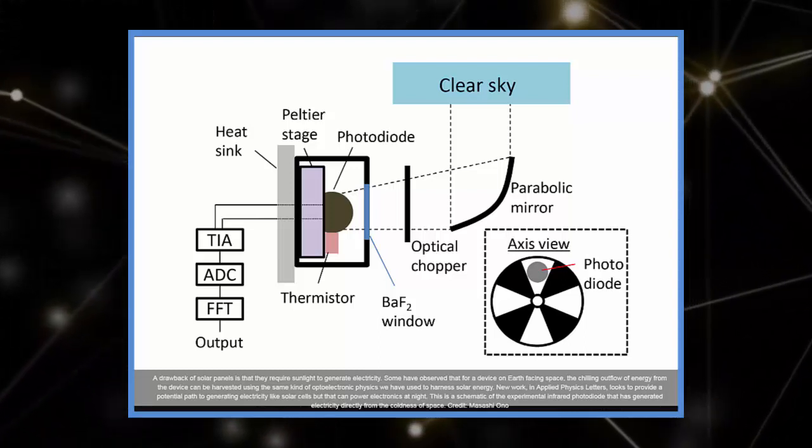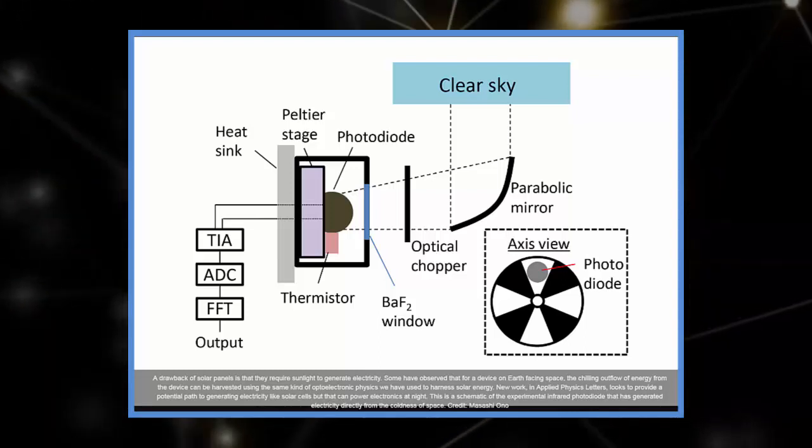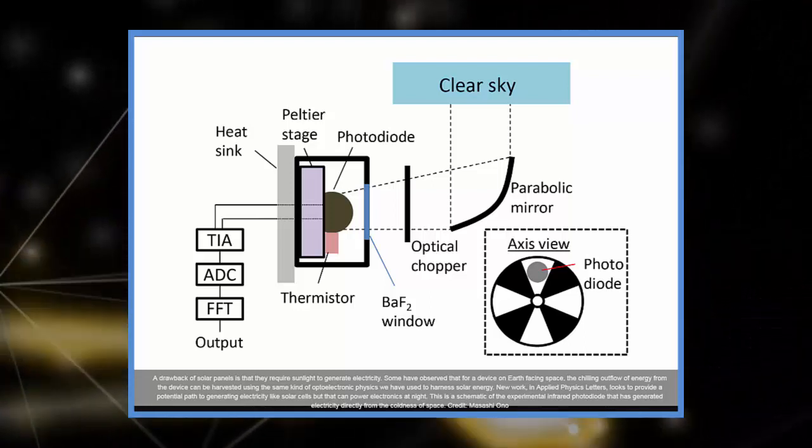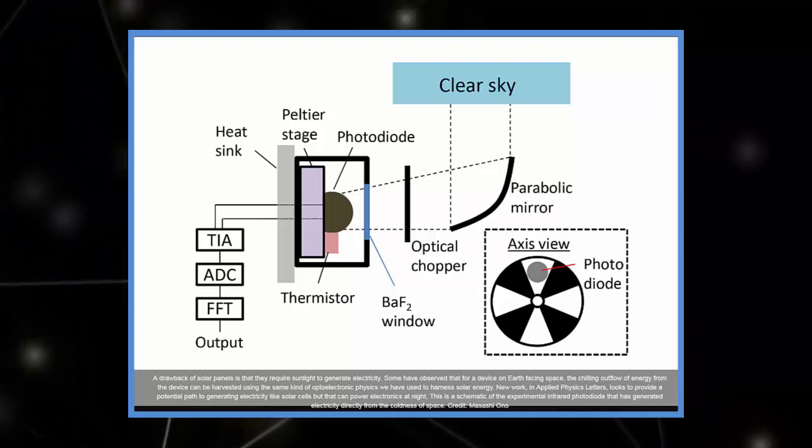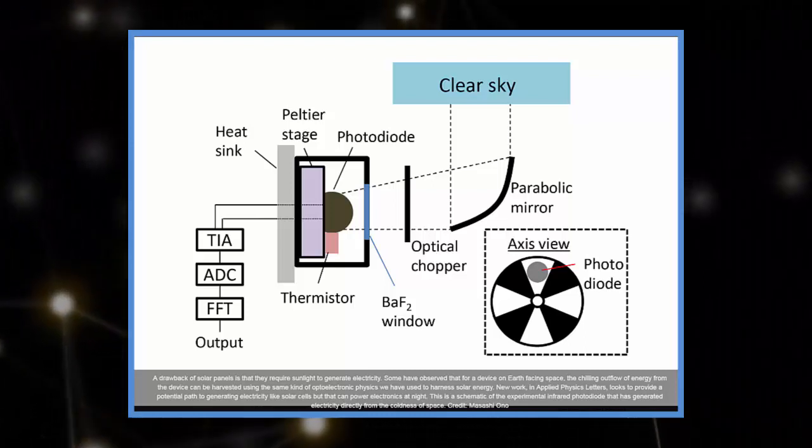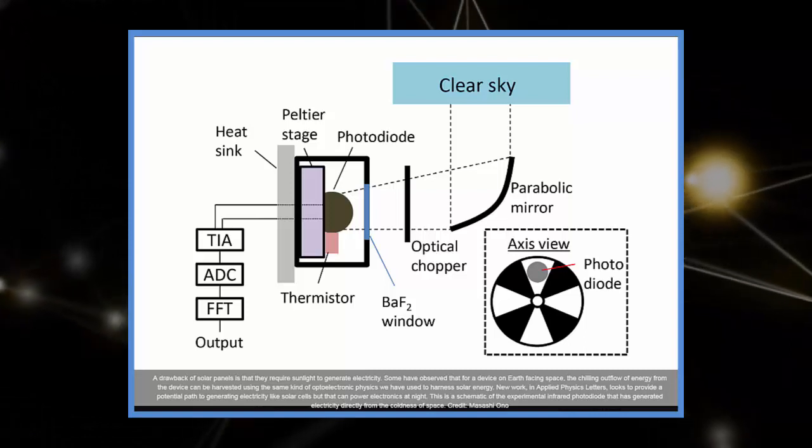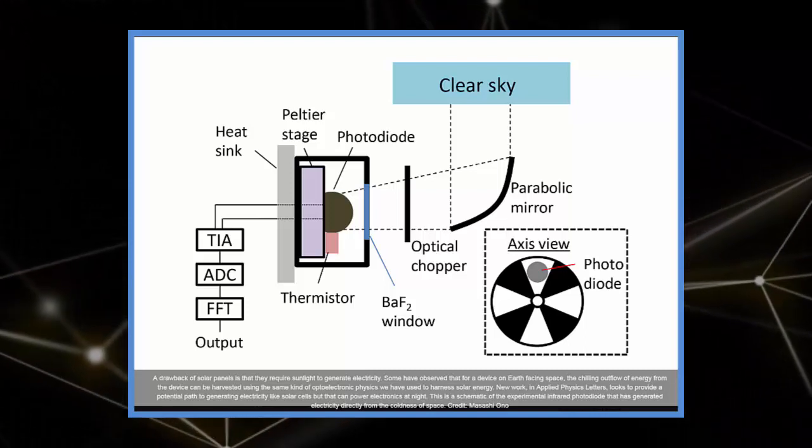The obvious drawback of solar panels is that they require sunlight to generate electricity. Some have observed that for a device on Earth facing space, which has a frigid temperature, the chilling outflow of energy from the device can be harvested using the same kind of optoelectronic physics we have used to harness solar energy.